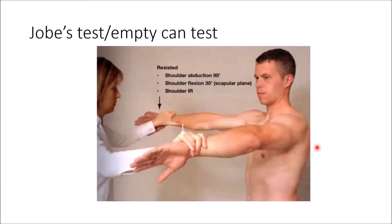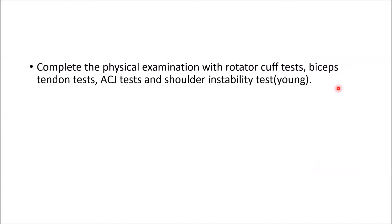Jobe's test, also known as the empty can test: with both arms in internal rotation, forward flexion, abducted about 90 degrees with 30 degrees of forward flexion, you apply a downward force while the patient resists. If this causes pain, it indicates impingement. Complete the physical examination with rotator cuff testing, bicep tendon test, ACJ test, and shoulder instability test for younger patients.